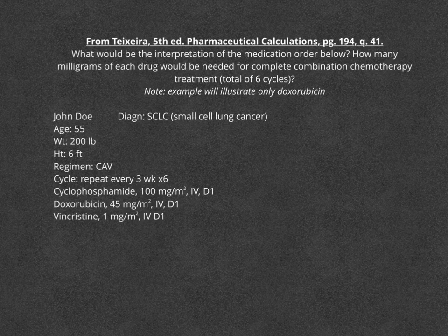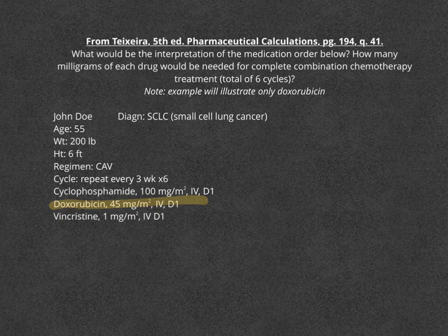We're only going to focus on the doxorubicin as an example, but you can see we have the patient's information: the diagnosis, the age, the weight, the height of the patient, and the regimen itself. Note that this cycle of these three medications will be repeated every three weeks for a total of six cycles. That will be important when we are calculating the amount needed. You can see the components of the treatment.